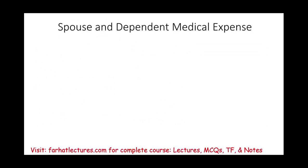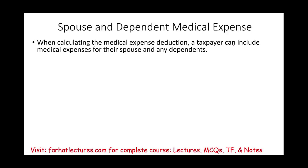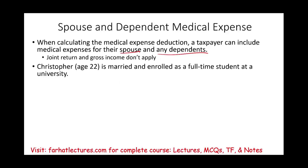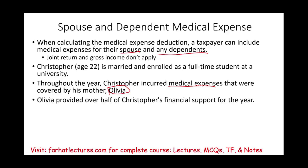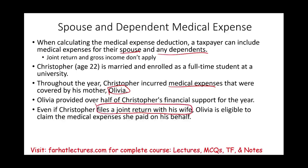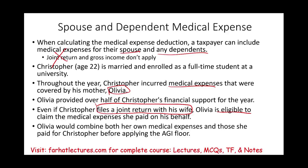When calculating the medical expense deduction, a taxpayer can include medical expenses for their spouse and any dependent. For the dependent or spouse, you don't subject their expenses to a joint return gross income test. For example, Christopher, age 22, is married and a full-time student. His mother Olivia provided over half of his financial support. Even though Christopher files a joint return with his wife, Olivia can claim his medical expenses on her return and combine them with her own.